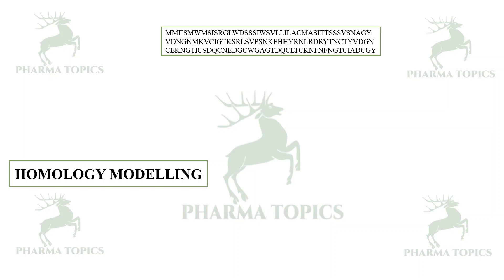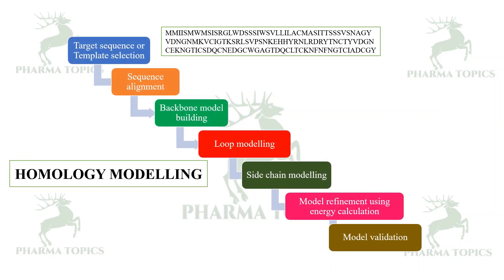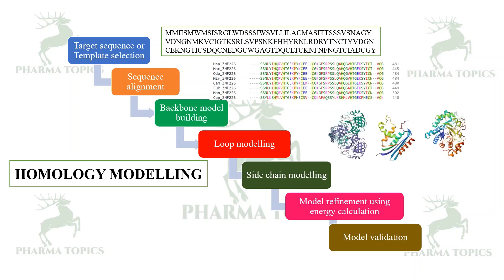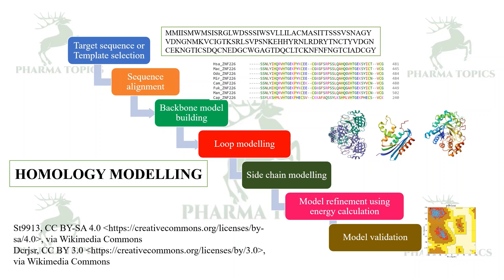These are the steps involved: first, target sequence or template selection must be done. Second, you have to align the sequences with the matched proteins found by BLAST. Then you have to build the backbone. After that, you do loop modeling — because alpha helices and beta sheets are connected by loops — followed by sidechain modeling. Then model refinement using energy calculations, and finally model validation by methods such as the Ramachandran plot.